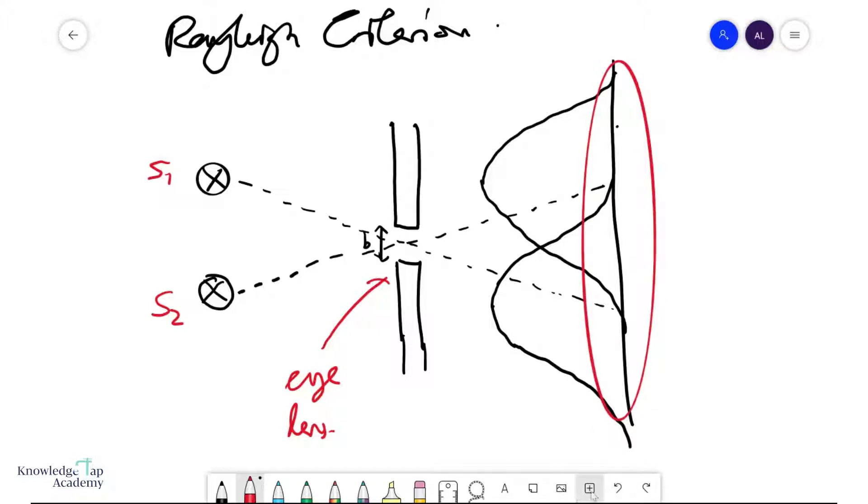And so according to Rayleigh, these two light sources would form images on the screen over here. And he says that if the images are formed in such a way that the maximum of one image here is directly on top of the first minimum of the other image, and of course the same for the other one, so the maximum of this image here is directly on top the first minimum of the other image.